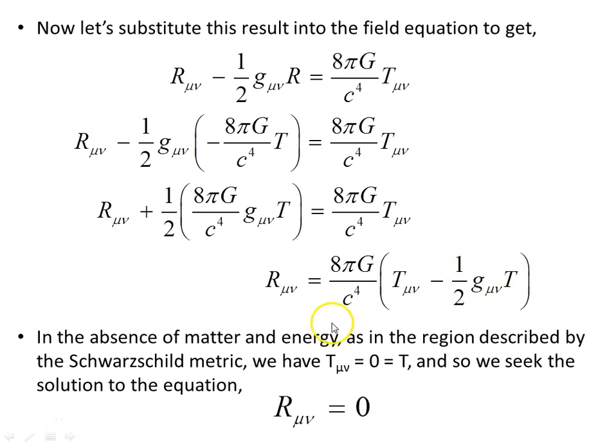Now, in the particular case, in the absence of matter and energy, as in the region described by the Schwarzschild metric, and that was in the Schwarzschild metric part 2 video, now we have T_μν equals 0 equals T, and so we seek the solution to the equation R_μν is 0. Because in the Schwarzschild space-time, that's the region outside the spherical distribution of mass, there is no matter and energy, so all of this is 0, and we're left solving R_μν equals 0.